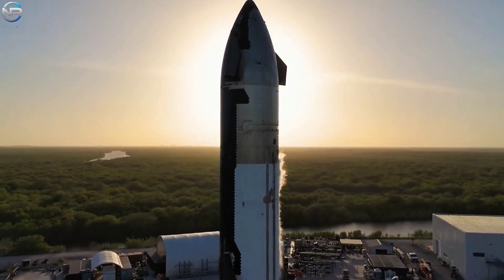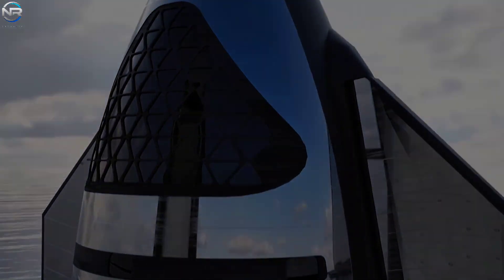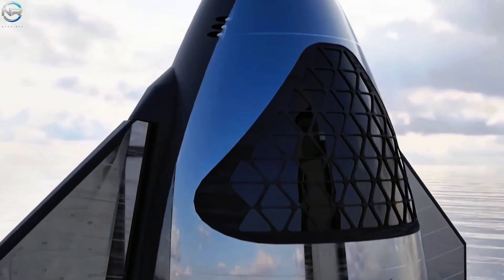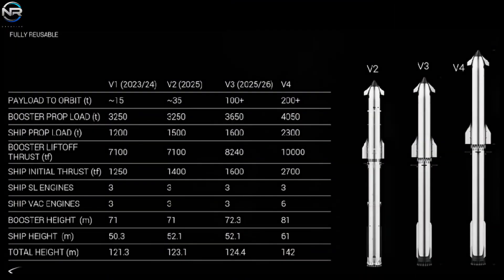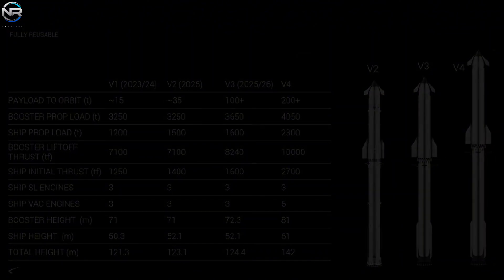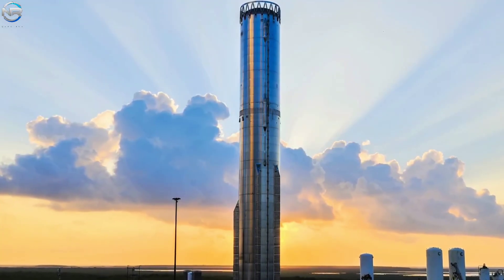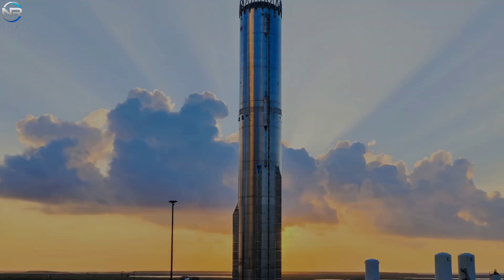One of Starship's defining features has consistently been its sheer size. However, it seems SpaceX isn't done pushing those boundaries yet. The V3 design aims for a larger overall configuration. In this iteration, the booster's height will increase from 71 meters to 72.3 meters, while the spacecraft will remain at the same height of 52.1 meters as seen on V2. Once assembled, the entire V3 assembly will reach a height of 124.4 meters, up from 123.1 meters on the previous model. This expansion is just the beginning, as SpaceX is already targeting even greater dimensions for the upcoming V4 version.